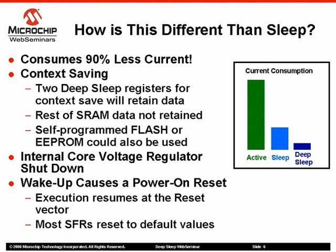On parts with an internal core voltage regulator, the regulator is shut down during deep sleep to conserve power. The voltage regulator needs time to stabilize before the part can wake up from deep sleep. Therefore, deep sleep can typically take 1–2ms to exit on these parts. On devices that do not have a core voltage regulator, wake-up times will be faster, typically 50 microseconds.